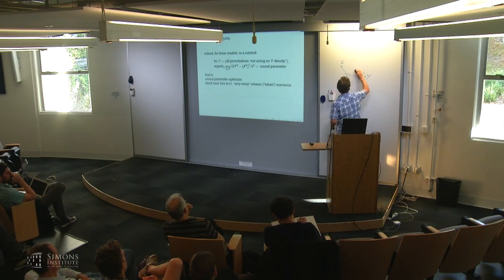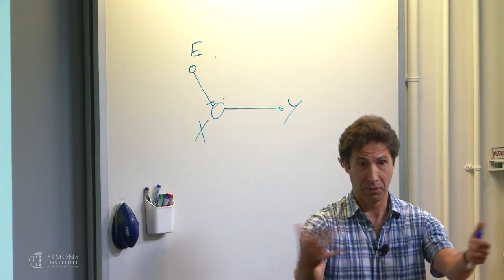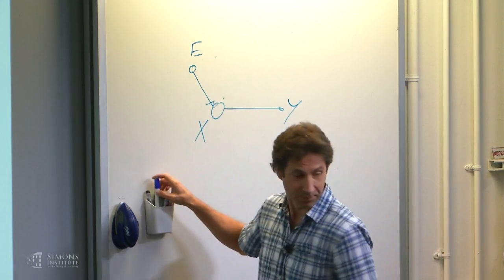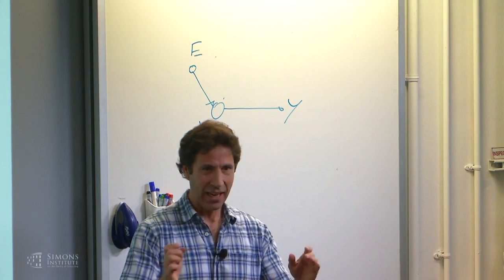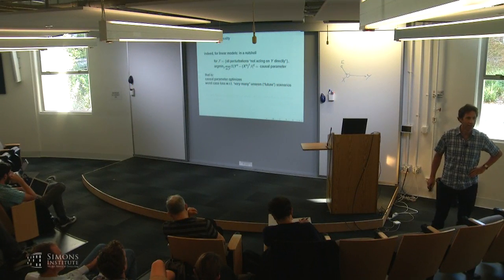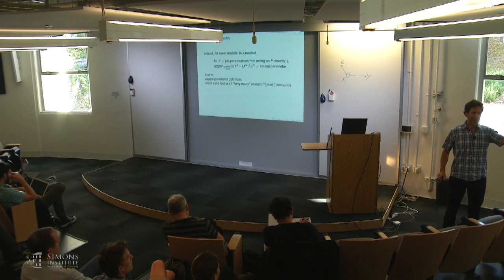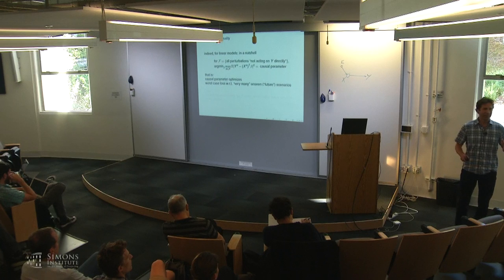The point of this is that causal parameters solve a worst-case risk optimization problem if the class satisfies certain conditions. The perturbations can be arbitrarily strong, but they're not allowed to act directly on Y. This is a big question, and I will relax that assumption later — we will actually allow the environment E to point to Y.